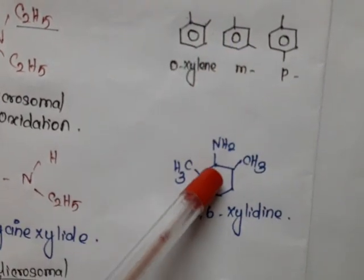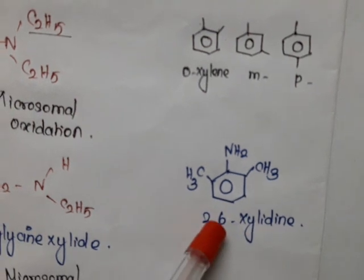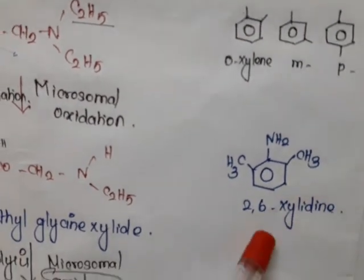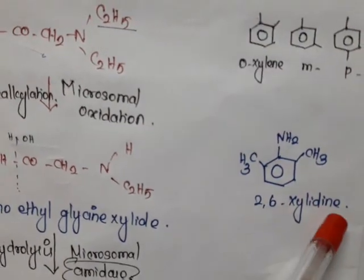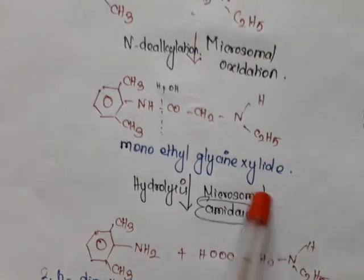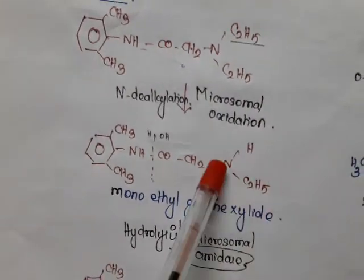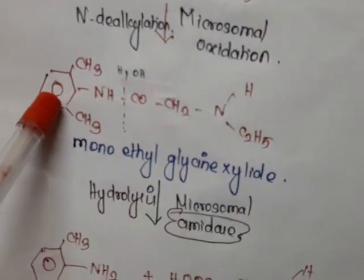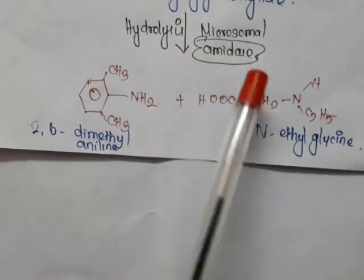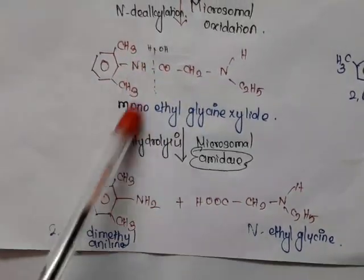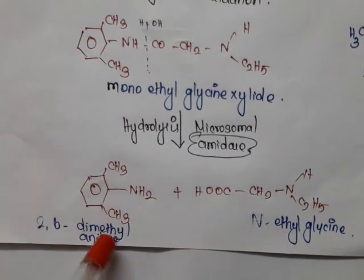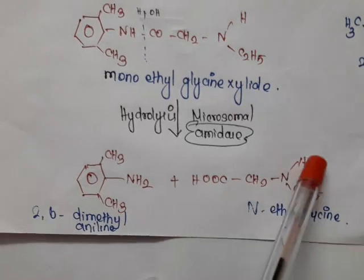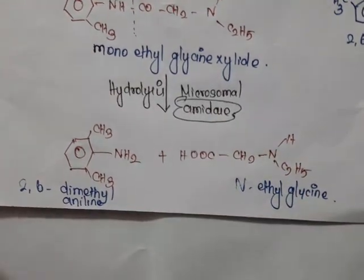When an amino group is added to the xylene ring — specifically to meta-xylene at the center — it is called xylidine, or 2,6-xylidine, otherwise known as 2,6-dimethylaniline. The N-dealkylation product is monoethylglycinexylidide, with only one ethyl remaining on nitrogen 2. This then undergoes hydrolysis by amidase enzyme, breaking the amide linkage, giving 2,6-dimethylaniline (2,6-xylidine) and N-ethylglycine as products.